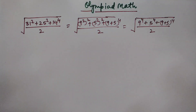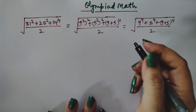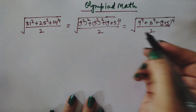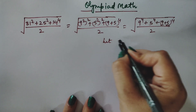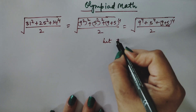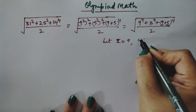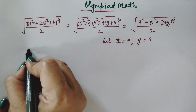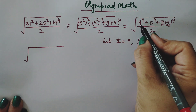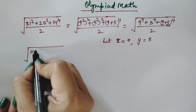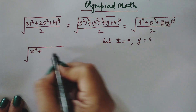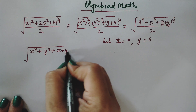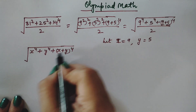In the next step, we assume variables: let x equal 9 and y equal 5. So our expression becomes: square root of x to the power 4, plus y to the power 4, plus (x+y) to the power 4, divided by 2.